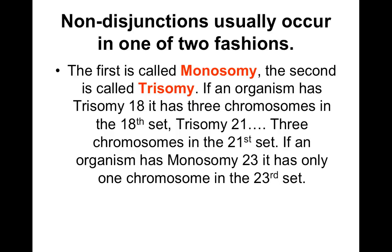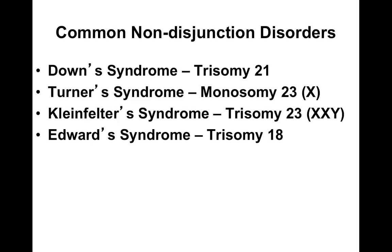There is trisomy 18, trisomy 21, and monosomy 23. A lot of you know what Down syndrome is — this is technically trisomy 21, so they have three copies of the 21st chromosome. Turner syndrome involves the 23rd chromosome — they only have one X, so they're female with one X. Klinefelter syndrome is a trisomy 23 — they are male because they have the Y, but they have two Xs, so they usually have some more female characteristics. Then there's Edwards syndrome, which is trisomy 18.